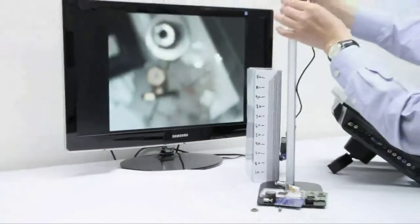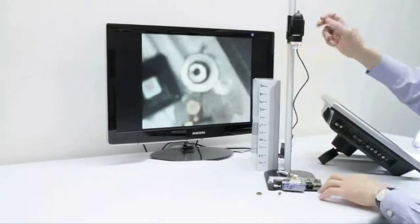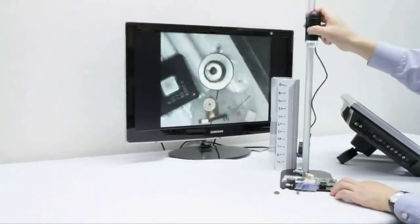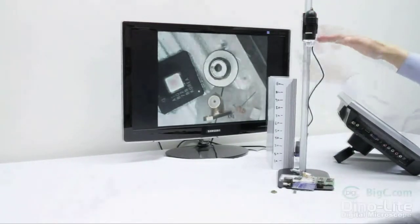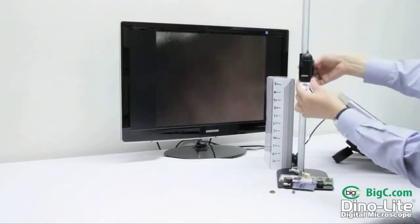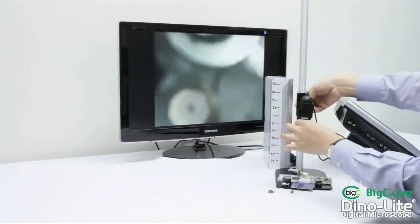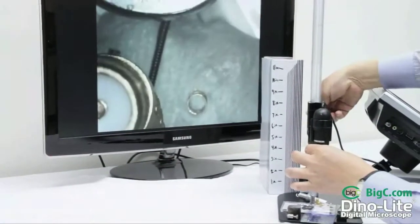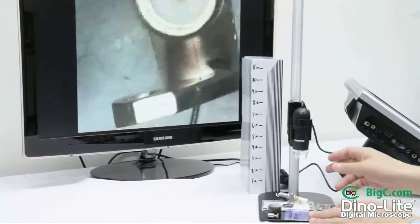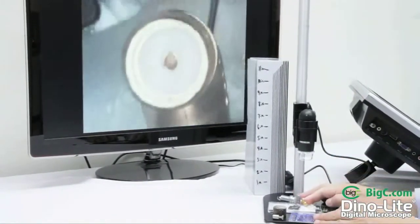So if we want to zoom out, we can essentially move the microscope away from the object and get a little bit of a lower magnification. This does feature a polarization unit, so you can eliminate some glare and be able to see your images in somewhat of a different light.